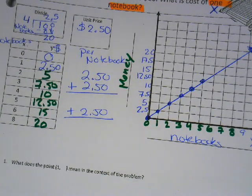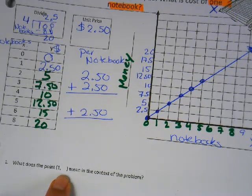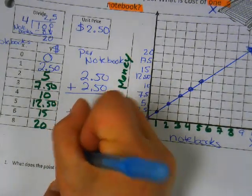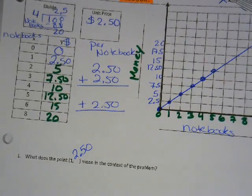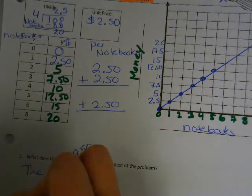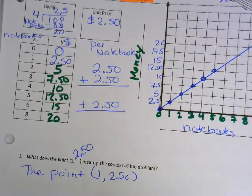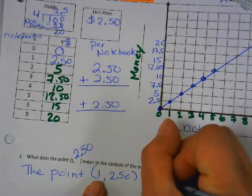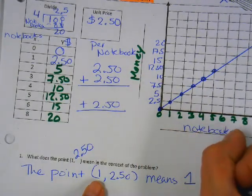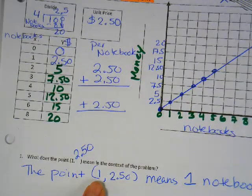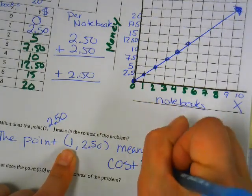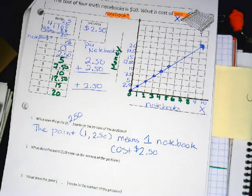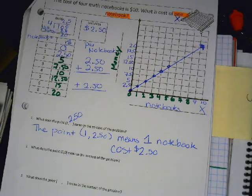All right. The three questions. What's the number missing next to the one in number one? One comma what? Two fifty. So whatever the unit rate is, it always goes next to your one. So two point fifty. So the point one comma two fifty. What does the point one comma two fifty mean? What does the one mean now? It means one notebook costs two dollars and fifty cents. Because in this story, our X are notebooks, and our Y are money. So one comma two fifty. Why did I use two fifty? Because that's what our unit rate is.